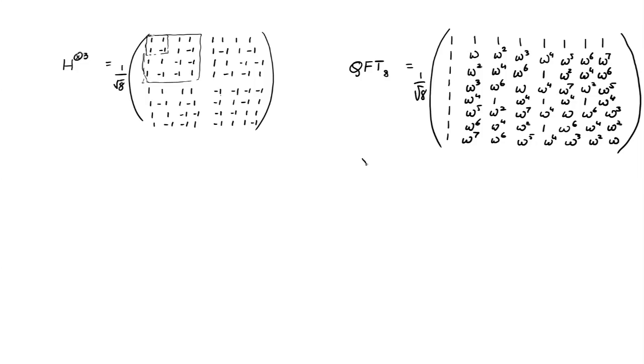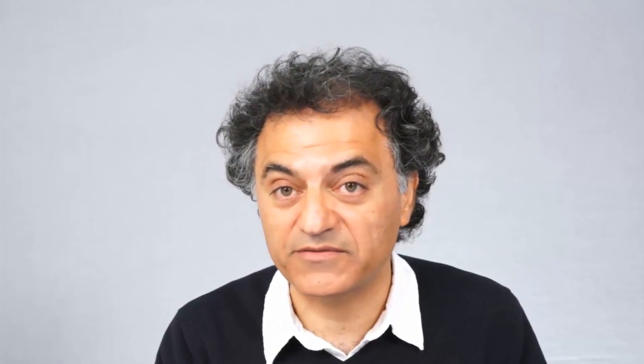Okay, so now let's look at the quantum Fourier transform on three qubits. So it's also an 8 by 8 matrix, but now it has these funny entries, omega, omega squared, etc. So what is omega? Well, omega is a primitive 8th root of unity. So if you solve the equation x to the 8 equal to 1, then you get eight complex roots, and omega is one of them. So what's omega? Omega is cosine 2 pi over 8 plus i sine 2 pi over 8. Another way of writing omega is as e to the 2 pi over 8 i. If you've not seen this before, it's just notation.